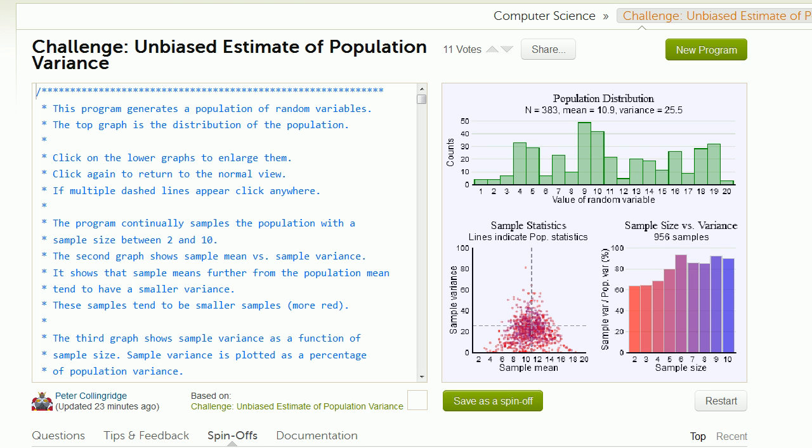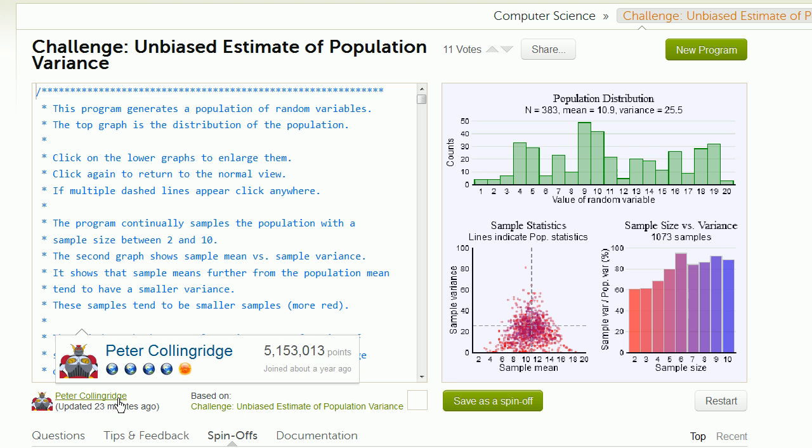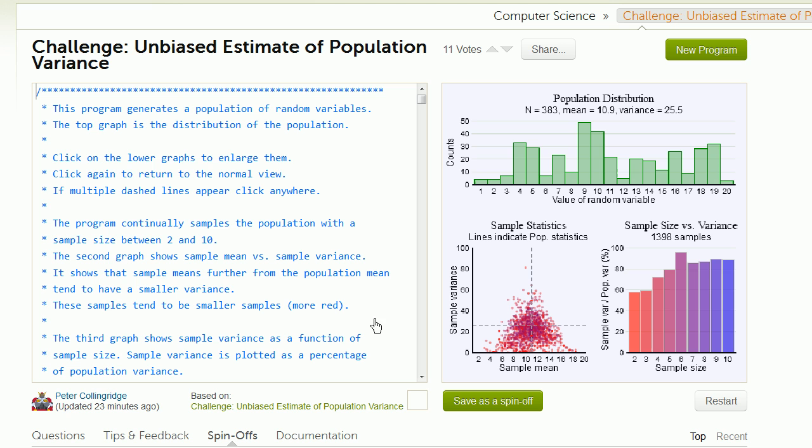This right here is a simulation that was created by Peter Kolingridge using the Khan Academy Computer Science Scratchpad to better understand why we divide by n minus 1 when we calculate an unbiased sample variance, when we are in an unbiased way trying to estimate the true population variance.